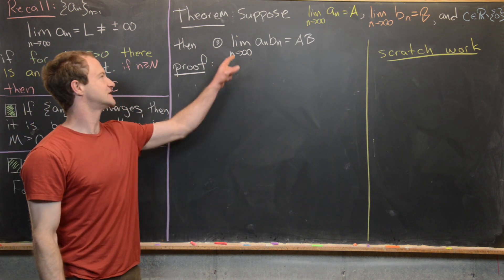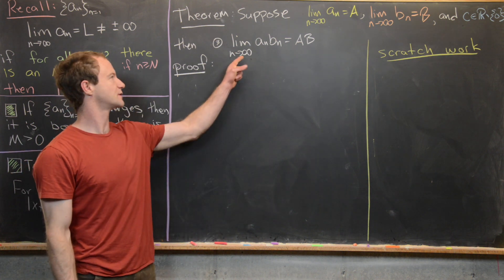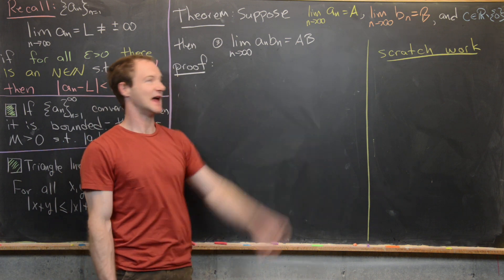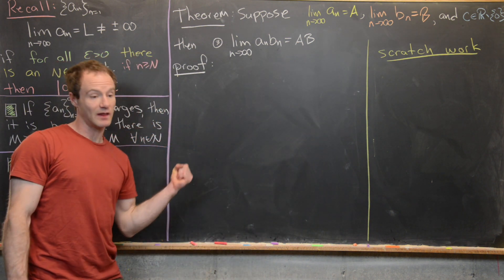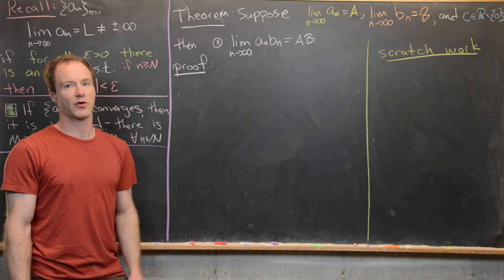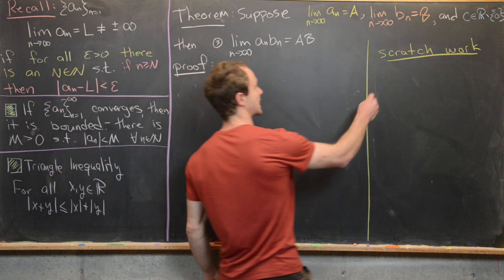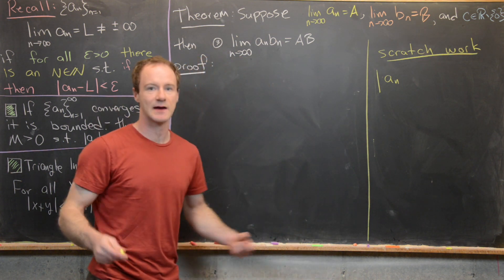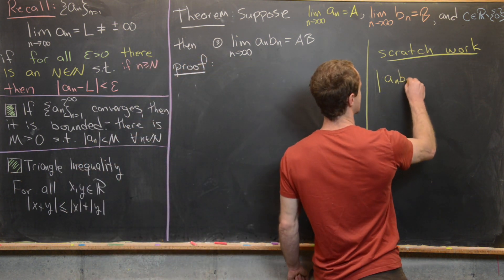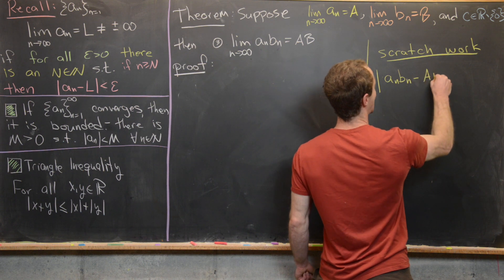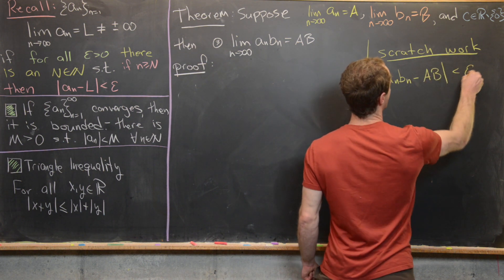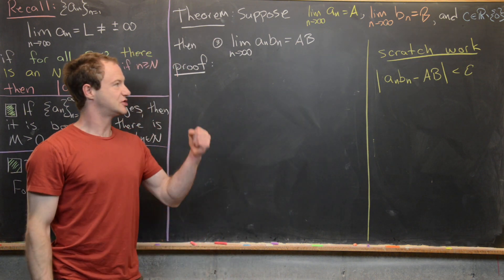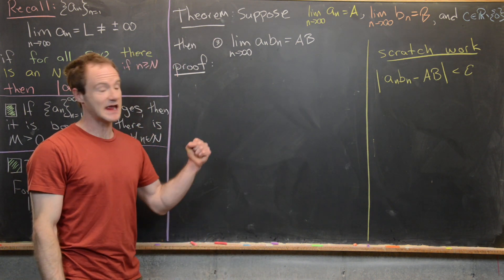Now we look at the product: we want to show lim(aₙ·bₙ) = a·b — the limit of a product equals the product of the limits. Starting from |aₙbₙ − ab| < epsilon, we cannot factor it into (aₙ − a) and (bₙ − b) directly, so we add and subtract a term.